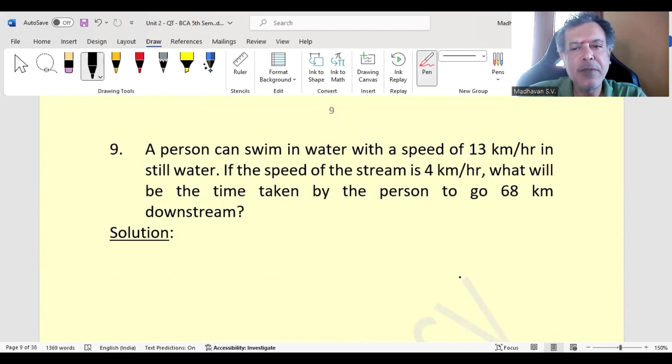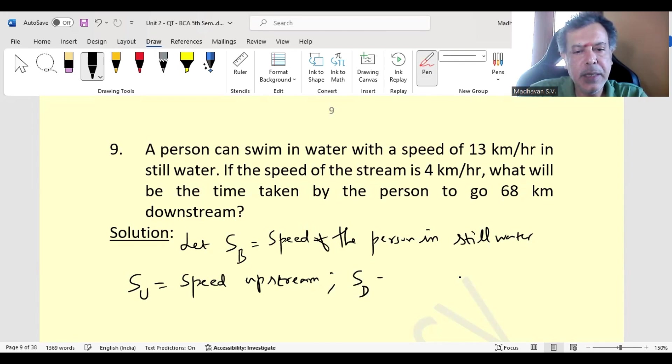Let us move on to the next. A person can swim in the water with a speed of 13 kilometer per hour in still water. If the speed of the stream is 4 kilometer per hour, what will be the time taken by a person to go 68 kilometer downstream?